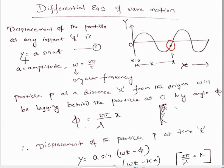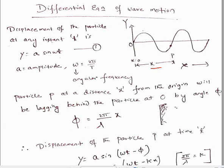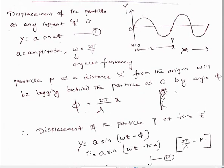Here ω is the angular frequency. The particle P is at a distance x from the origin. If we have a particle at the origin O and a particle at point P separated by distance x, then the phase difference between these two particles is given by φ = (2π/λ)·x. That is, phase difference φ = (2π/λ) × path difference.